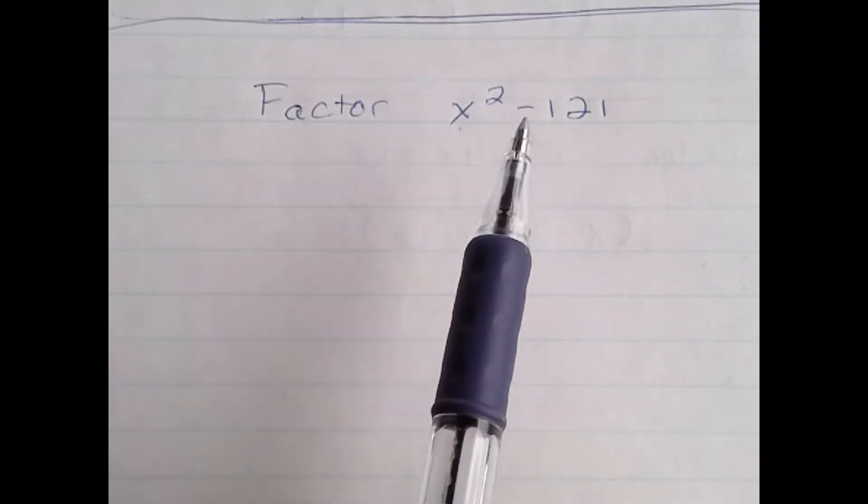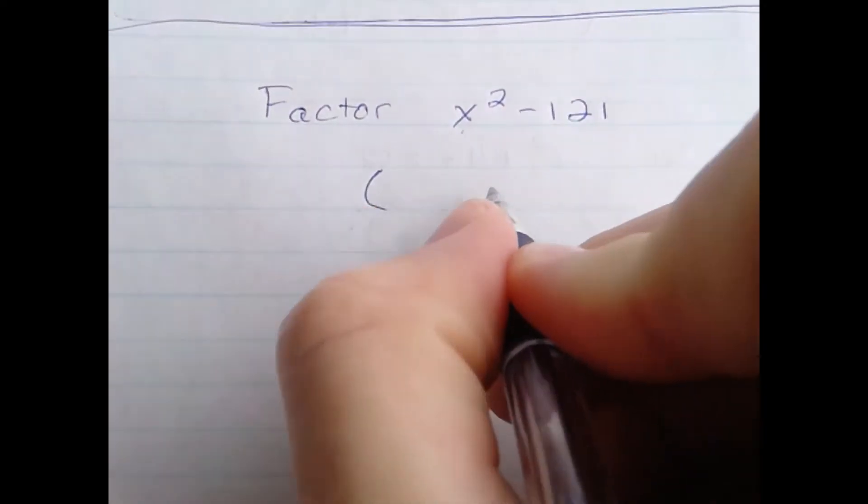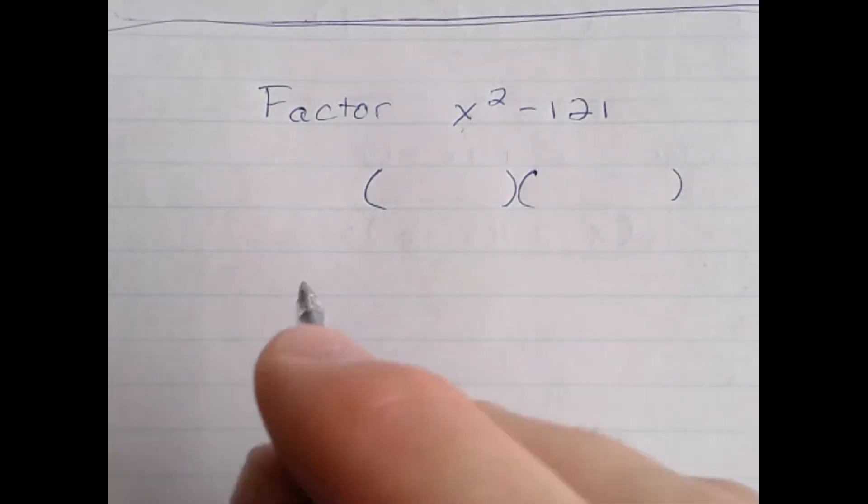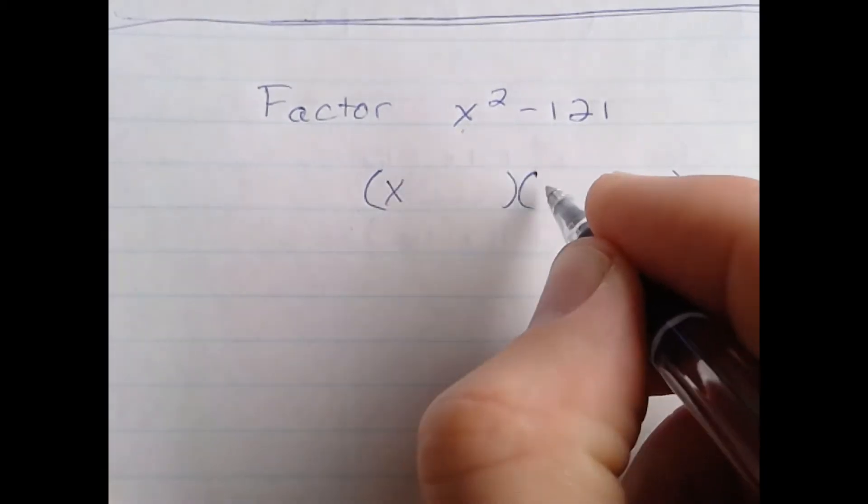This tells us it's the difference of squares. In order to factor, I'll simply set up my answer, and I know x goes here and x goes here.